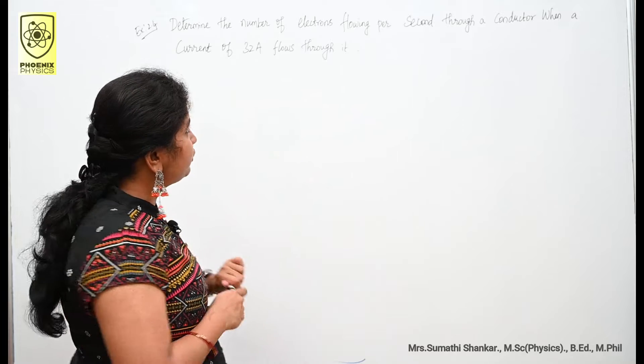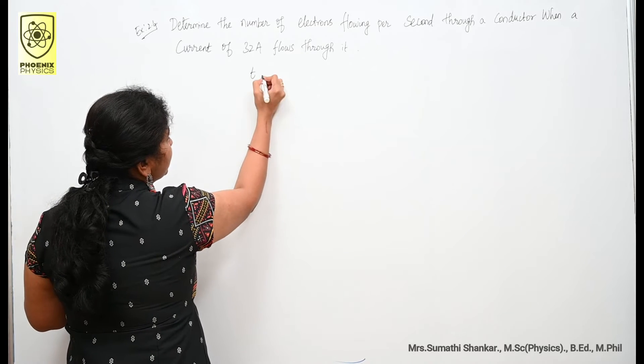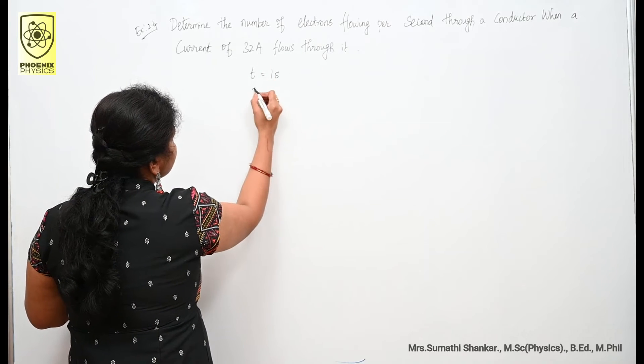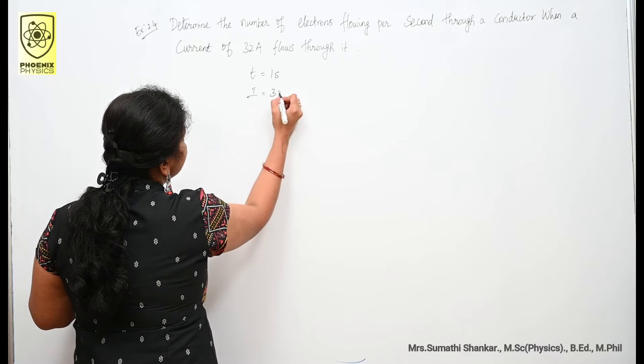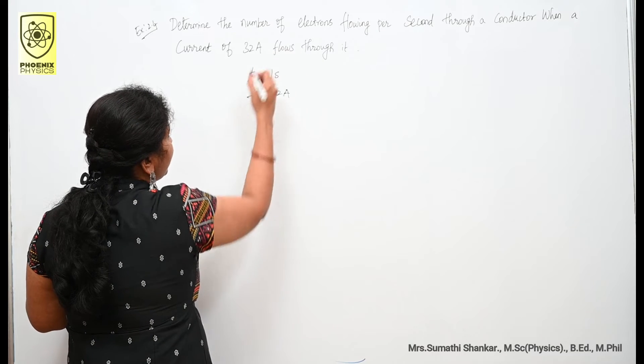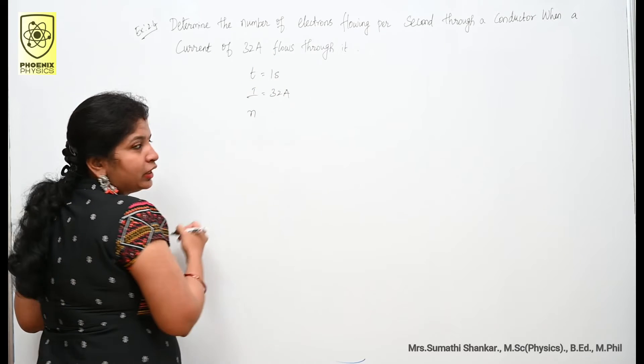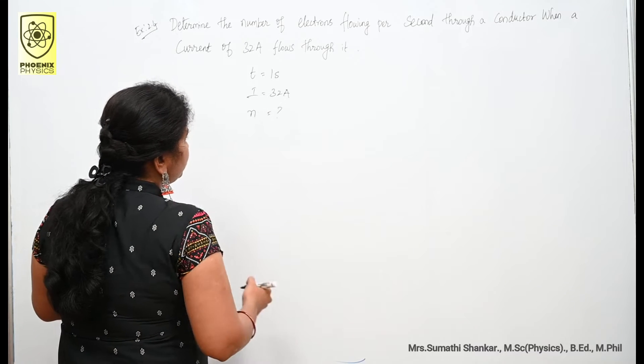What is given? Time is given, that is one second. Current is given, I is equal to 32 ampere. You have to calculate number of electrons, n value.